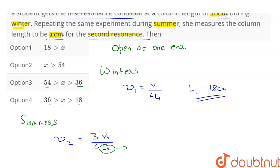In the question, L2 is taken as x cm. Therefore, nu2 is equal to 3V2 upon 4 into x.